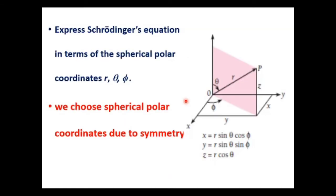As the system has spherical symmetry, we use the spherical polar coordinate system. The coordinates are r, theta, and phi. r is the radial coordinate — the radial distance to the point P. Theta is the polar angle, the angle between the z-axis and the radial vector. Phi is the angle between the x-axis and the plane containing r in the xy plane.